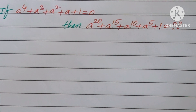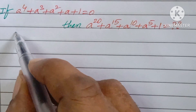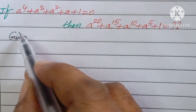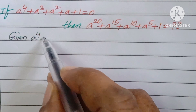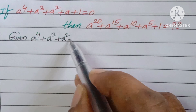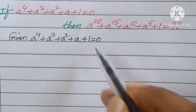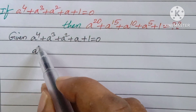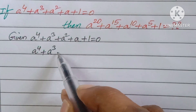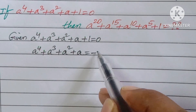There are two ways to get the value of a power 5. Here you have to find the a power 5 value. Given the equation a to the power 4 plus a cube plus a square plus a plus 1 equal to 0, we can rearrange: a to the power 4 plus a cube plus a square plus a equal to minus 1. This is the first model.